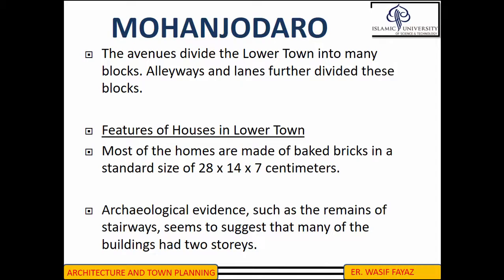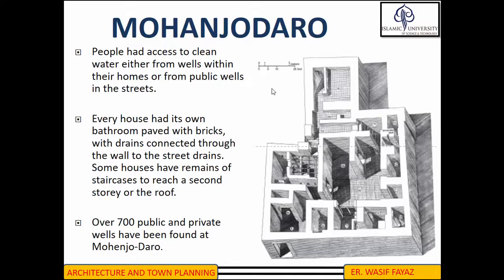Most houses in the Lower Town were made of standard-size bricks of 28 x 14 x 7 cm. Archaeological evidence has shown remains of staircases, indicating that even the Lower Town had multiple-storied houses. People had access to clean water from wells within their homes or from public wells in the streets. Every house had its own bathroom paved with bricks, with drains connected through the wall to the street drains.